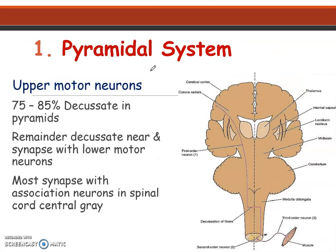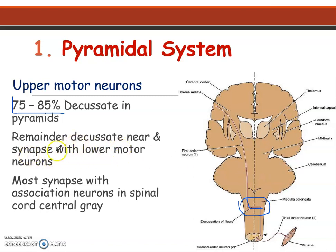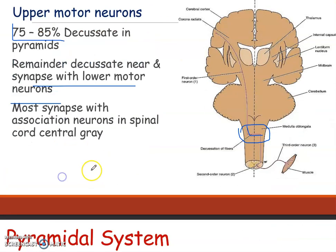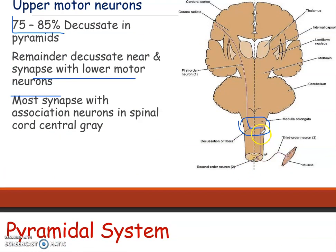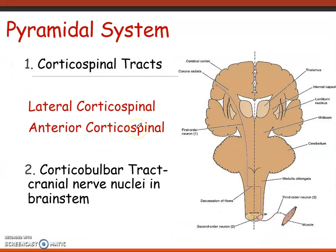In the pyramidal system, upper motor neurons — 75 to 85 percent — decussate in the pyramids of the medulla oblongata here. The remaining fibers synapse with the lower motor neurons without crossing. Some decussate here and in the pyramidal system there are the lateral corticospinal and anterior corticospinal tracts, and the corticobulbar tract.